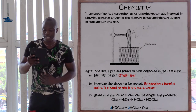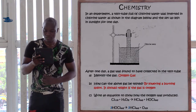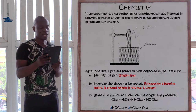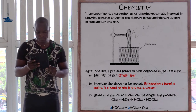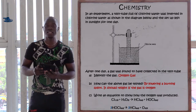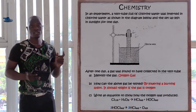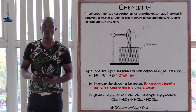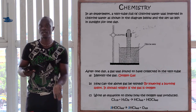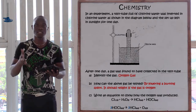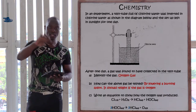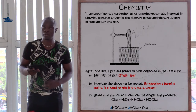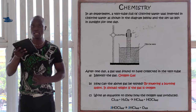Question number eight: a test tube full of chlorine water was inverted in chlorine water and left in the sunlight for one day. The first question is: identify the gas that was produced. A test tube full of chlorine was inverted inside water. After some time, the water rose and covered the space inside the test tube. The gas produced is oxygen gas.